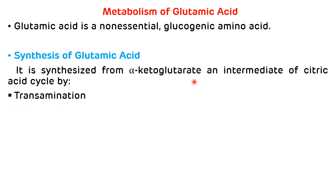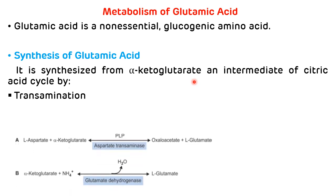Glutamic acid is synthesized from alpha-ketoglutarate by the first transamination reaction. Transamination means transfer of amino group. There is a conversion of alpha-ketoglutarate into glutamate with the help of the enzyme aspartate transaminase, which is also called AST or SGOT. This transamination reaction requires one coenzyme, that is PLP — pyridoxal phosphate. This transamination reaction is a reversible reaction.